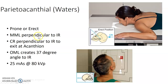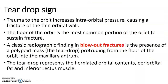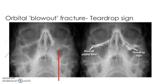Waters for orbits: MML perpendicular, exit at the acanthion, OML at a 37-degree angle to the image receptor. Regarding the teardrop sign — trauma to the orbit increases intraorbital pressure, causing a fracture of the thin orbital wall. The floor of the orbit is the most common portion to sustain a fracture. A classic finding in blowout fractures is the teardrop sign: a polypoid mass protruding from the floor of the orbit into the maxillary antrum, representing herniated orbital contents — periorbital fat and the inferior rectus muscle.